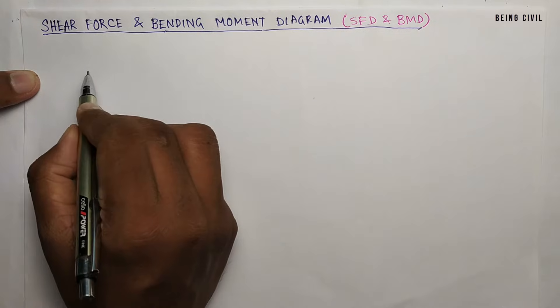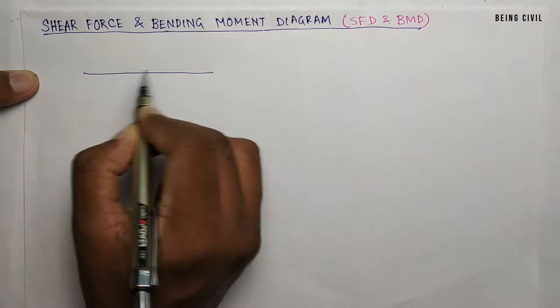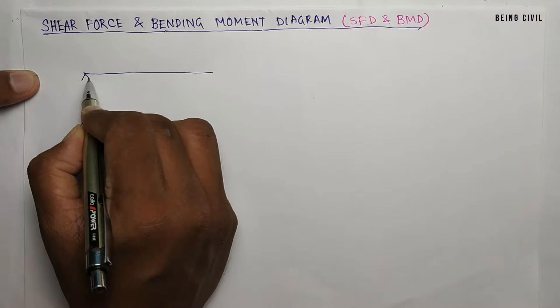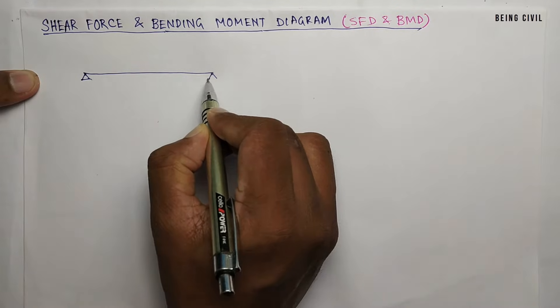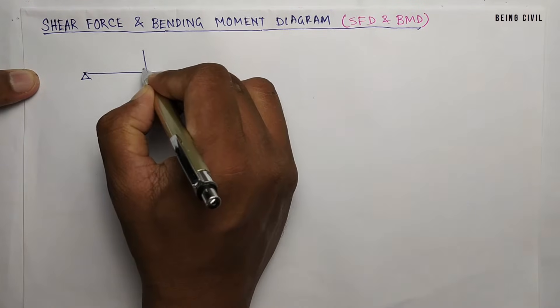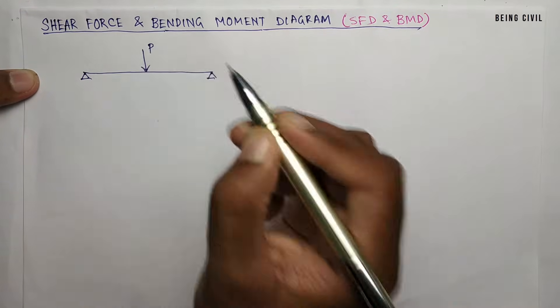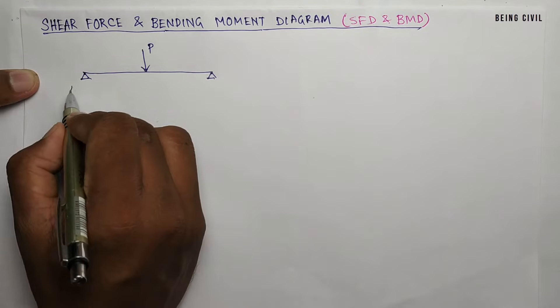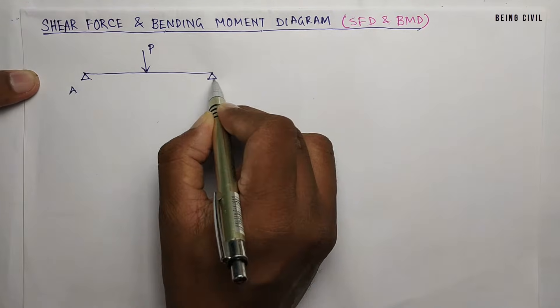Hello everybody, welcome to Being Civil. In this video I will show you how to draw shear force and bending moment diagrams of a simply supported beam with a point load. We will first place the point load at the midpoint of the beam and then place it at any distance on the beam.